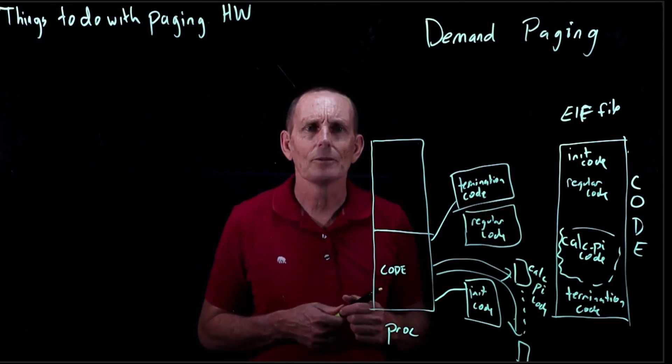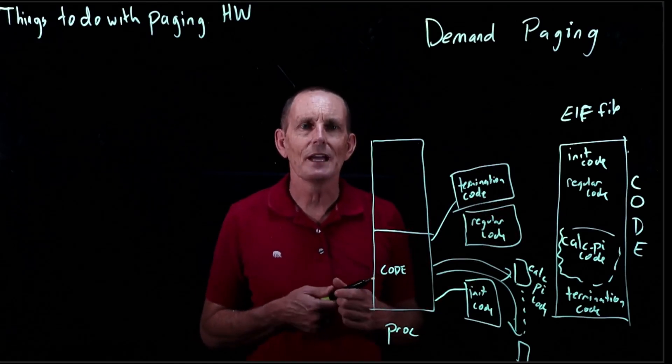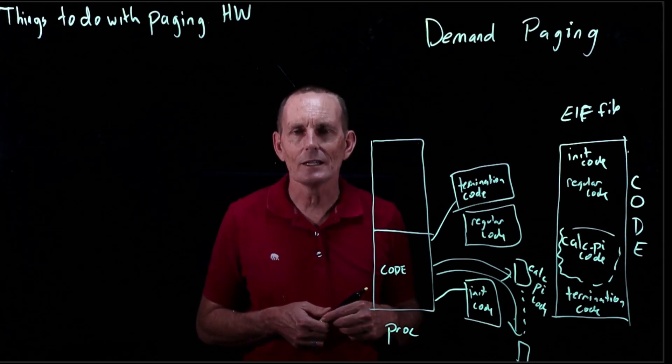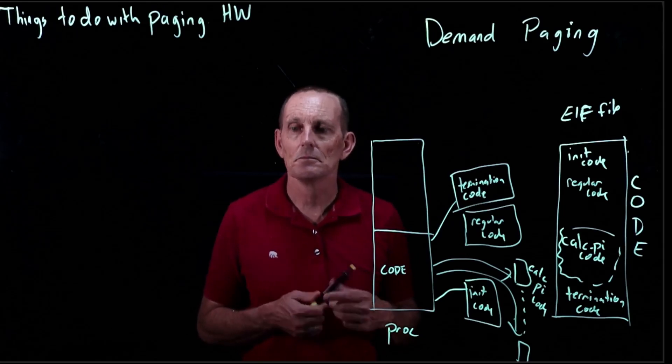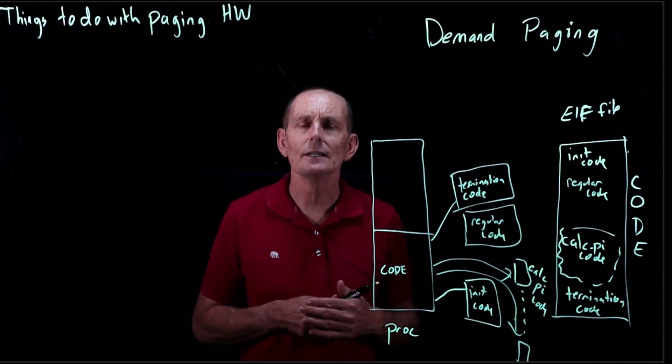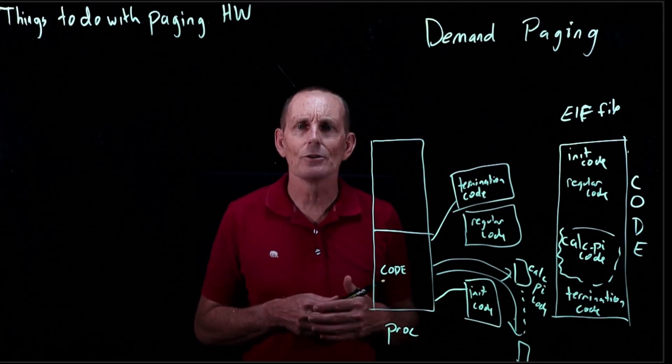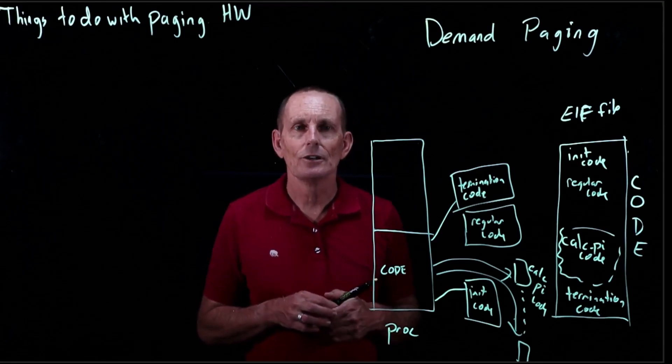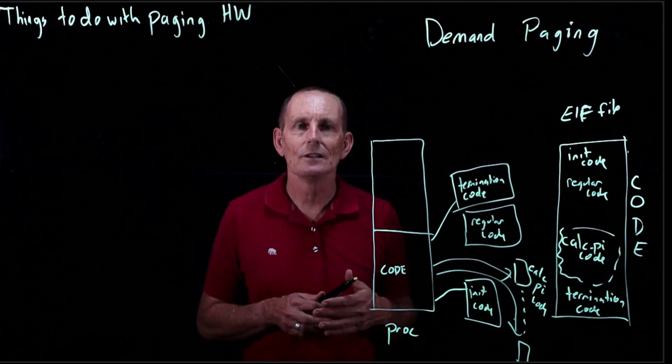So how can we optimize this? Well, the idea is: don't load code that's not needed. That seems like a reasonable idea. But how do we know which code is needed? And the answer is that you know code is needed when it's called.